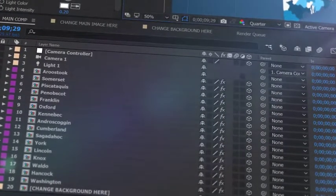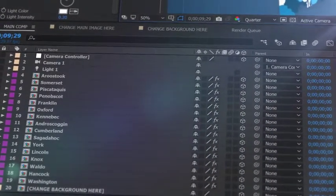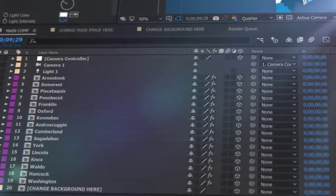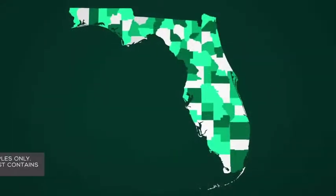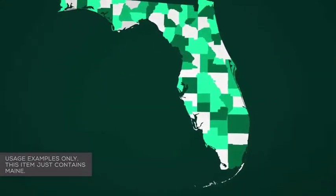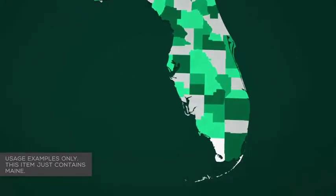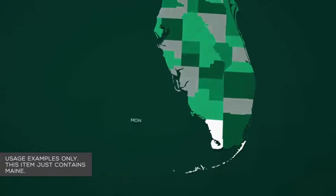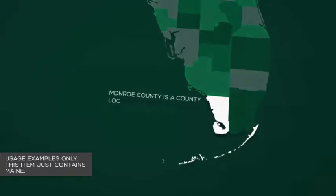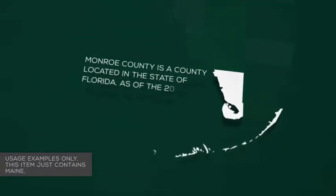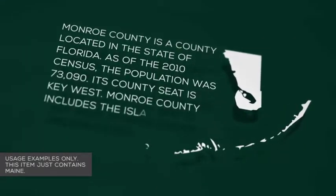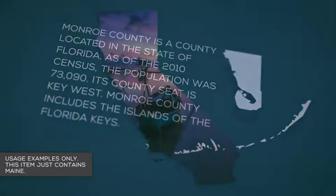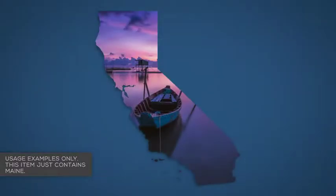so you can scale, position, color, and add effects as required. Zoom in to areas of interest and hide the layers you don't need to focus on certain counties. Animate individual counties and add your own text and camera moves as required.